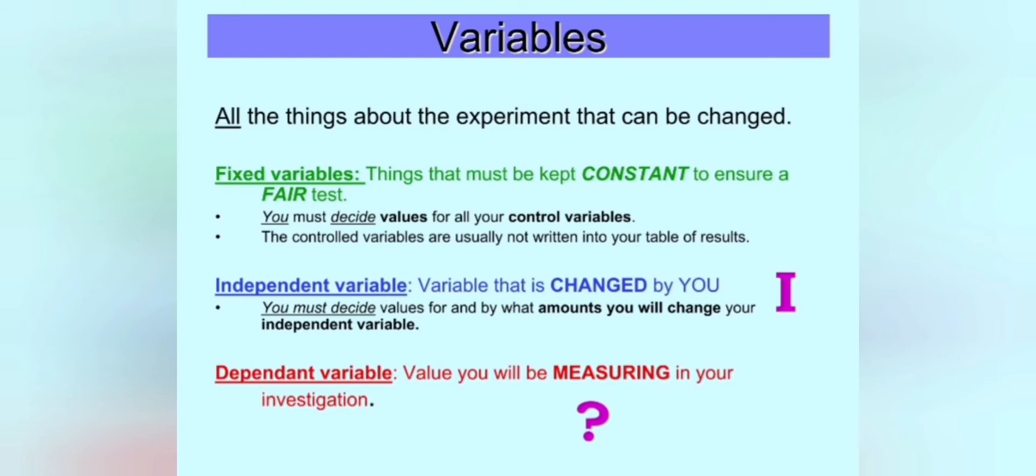This is the variable that I control from the beginning as the guy doing the experiment. The dependent variable is obviously a value that I'm going to be measuring throughout the investigation. So at the start I don't know the values yet. That depends on what's going to happen during the experiment.